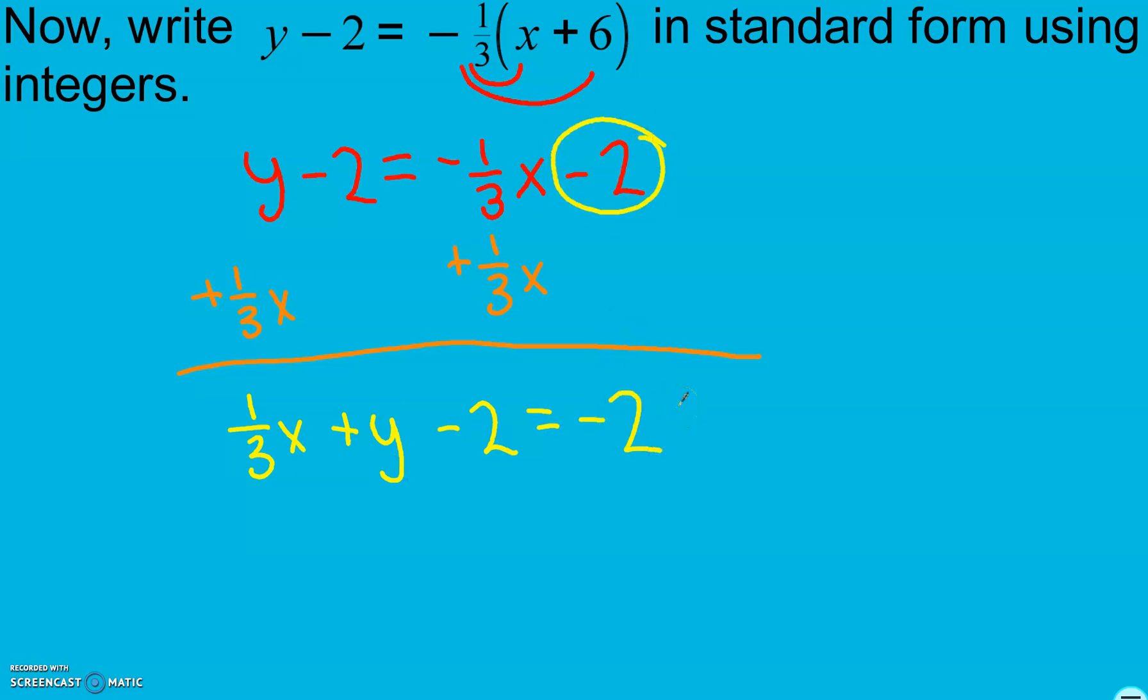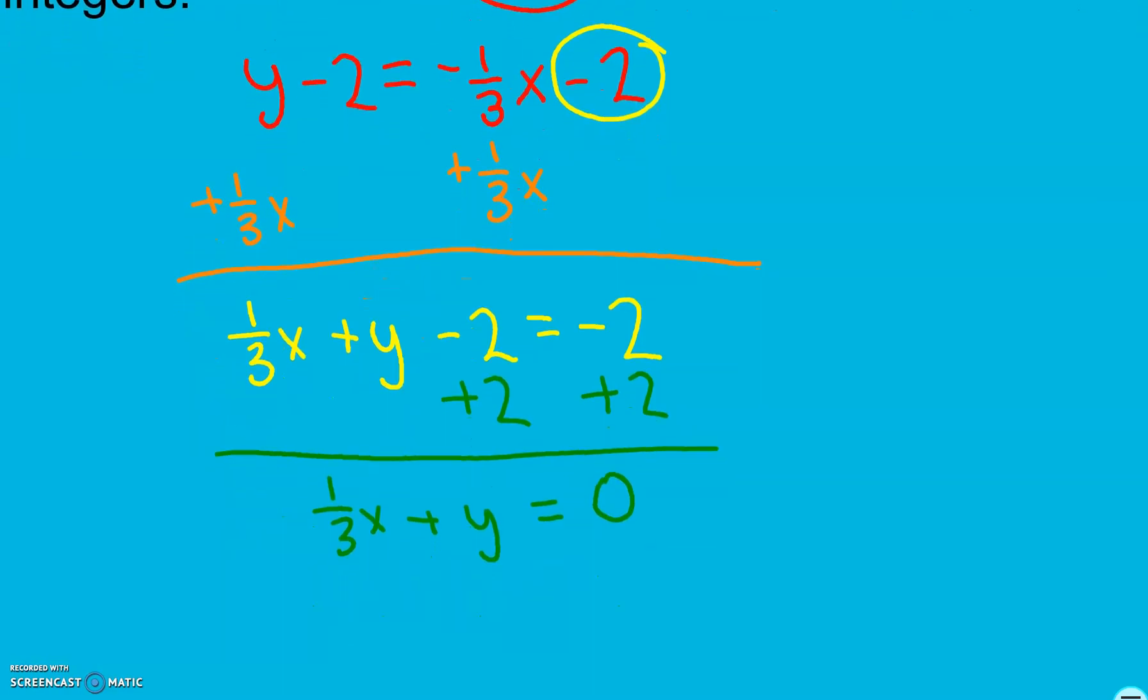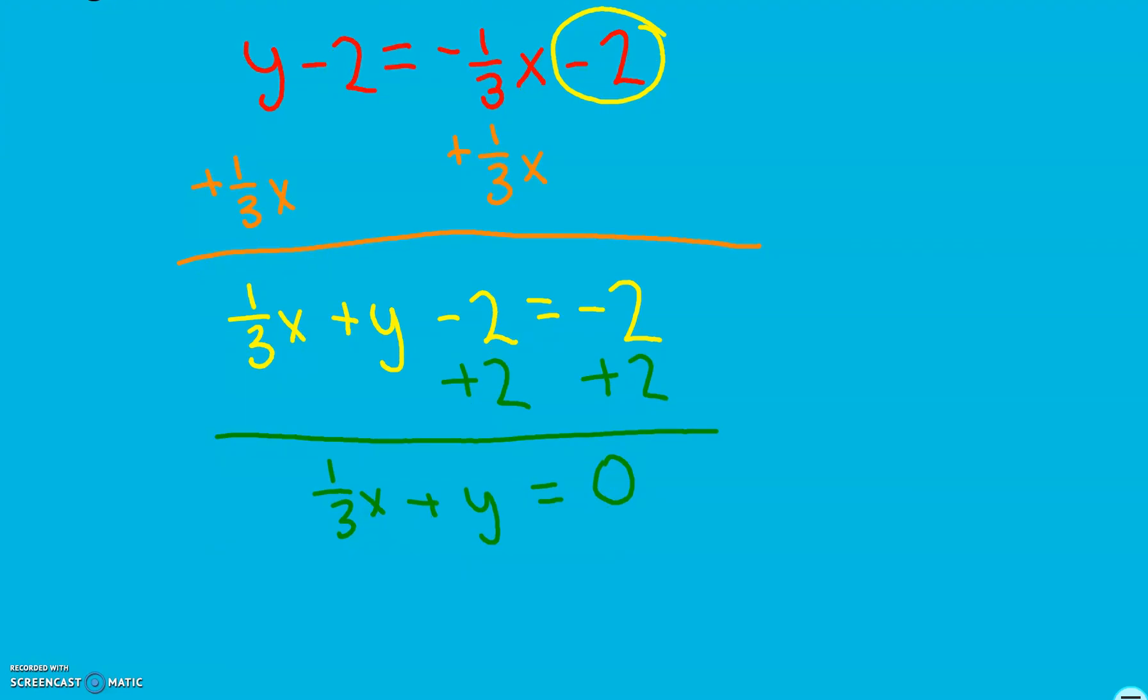We could have also put it in slope intercept form first by adding a 2. Either way it doesn't matter. Now that I have all my variables together on one side I get my constants together so I add 2 and if I change one side I change both. 1 third x plus y equals here I get 0. Now I have it in standard form all my variables together on one side constant on the other here my constant is 0 but they're not as an integer so in order to get integers I take my common denominator here that's a 3 and I multiply every single term on both sides. 3 divided by 3 is 1 so here I just get 1x or just x plus 3y equals 0 and that's our equation in standard form with integer coefficients.